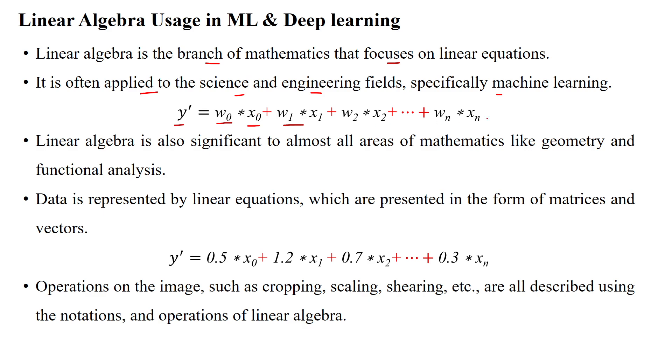For example, W0, X0. Here all the Ws are represented as weight parameters. W0 is the bias, and all the XIs are inputs into the machine learning model or deep learning model.